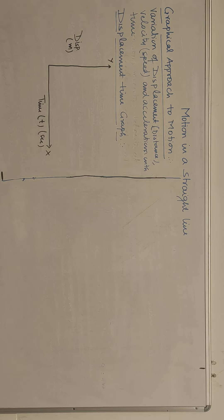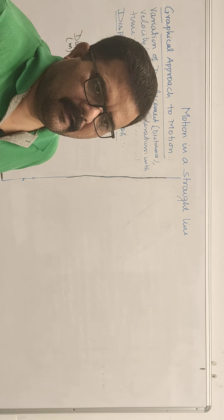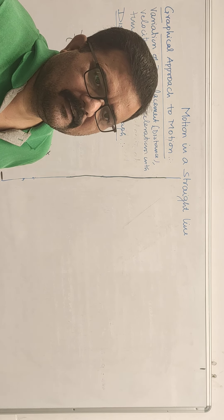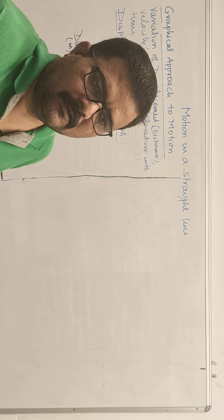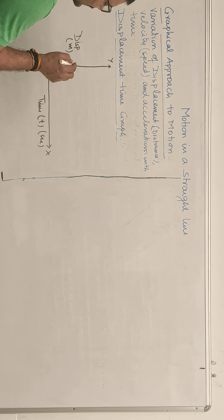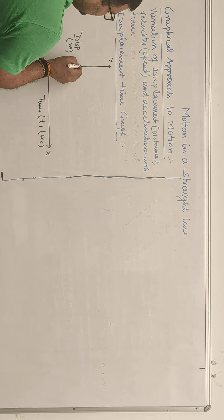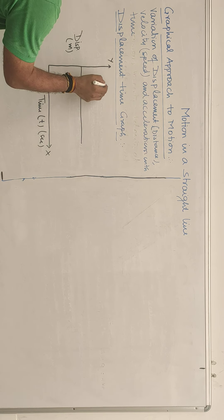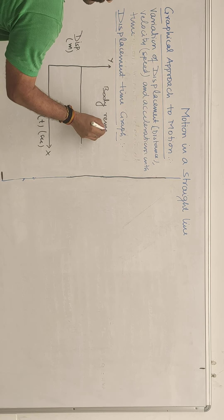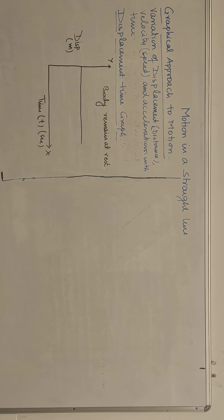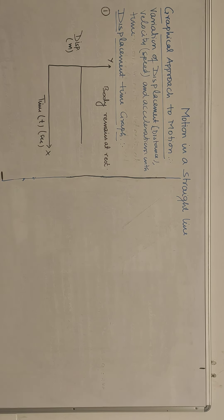The first case: you walk from your class to the stairs and remain standing there. Time goes on increasing, but at the stairs you remain at rest — displacement remains constant while time increases. This means the body remains at rest. This is the first graph — displacement-time graph where body remains at rest.